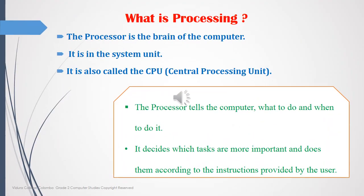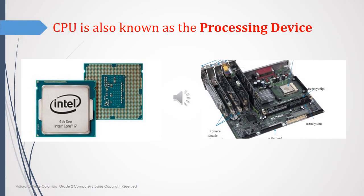What is processing? The processor is the brain of the computer. It is in the system unit, and it is also called the CPU. The processor tells the computer what to do and when to do it. It decides which tasks are more important and does them according to the instructions provided by the user. The CPU is also known as the processing device.